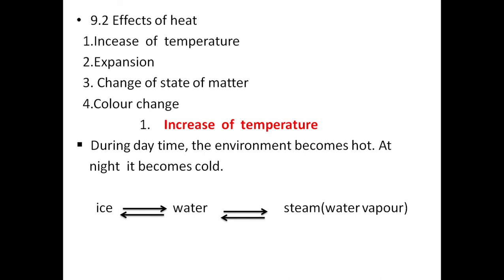The effects of heat include: increase of temperature, expansion, change of state of matter, and color change. Regarding temperature: during the daytime the environment becomes hot and at night it becomes cold. If you supply heat to ice, it turns to water; more heat turns water to steam. If you remove heat from steam, it becomes water; removing more heat turns water to ice.